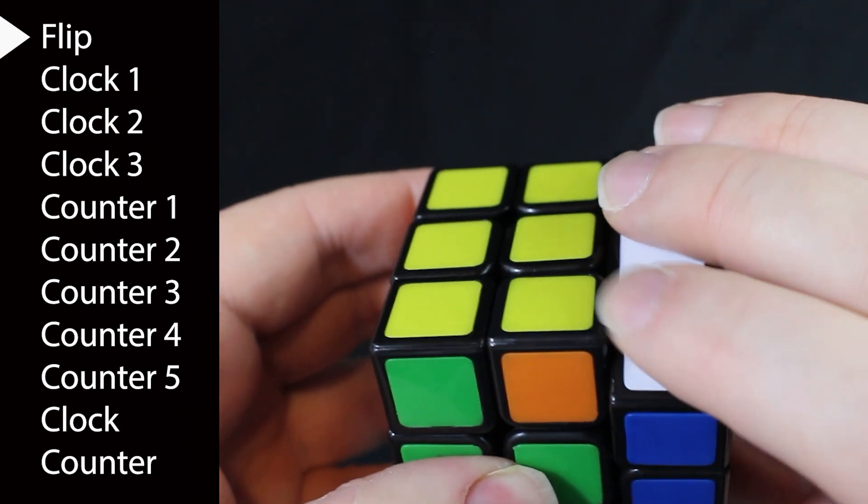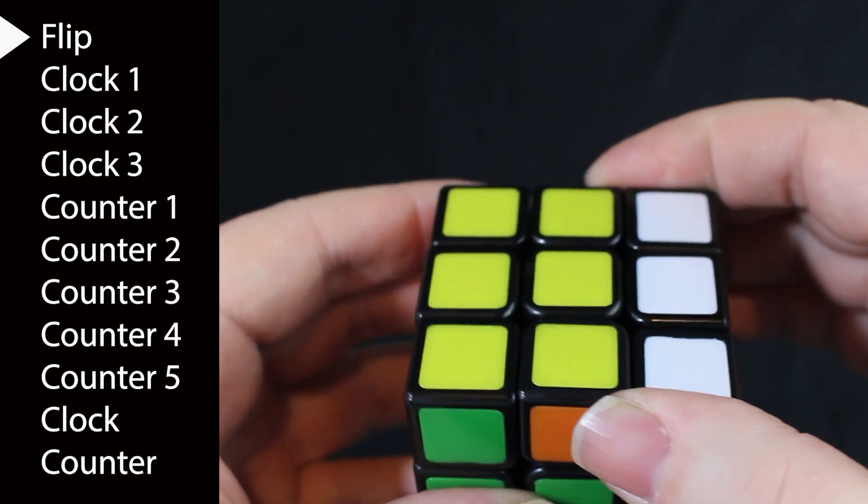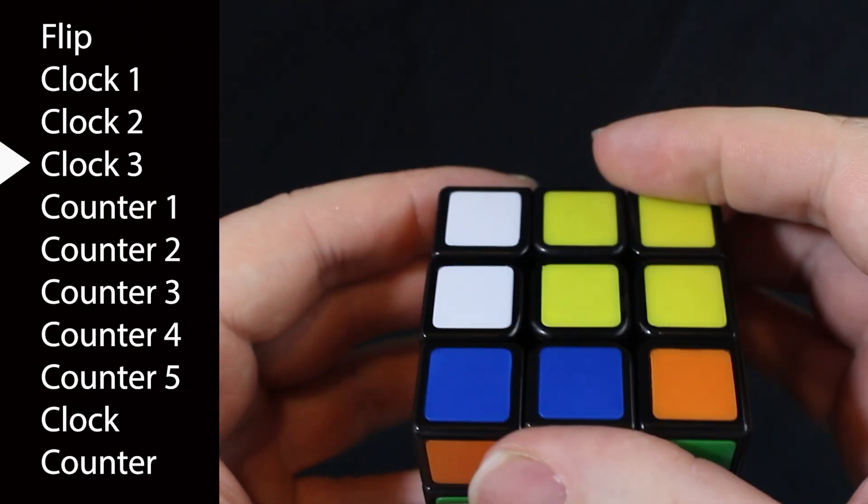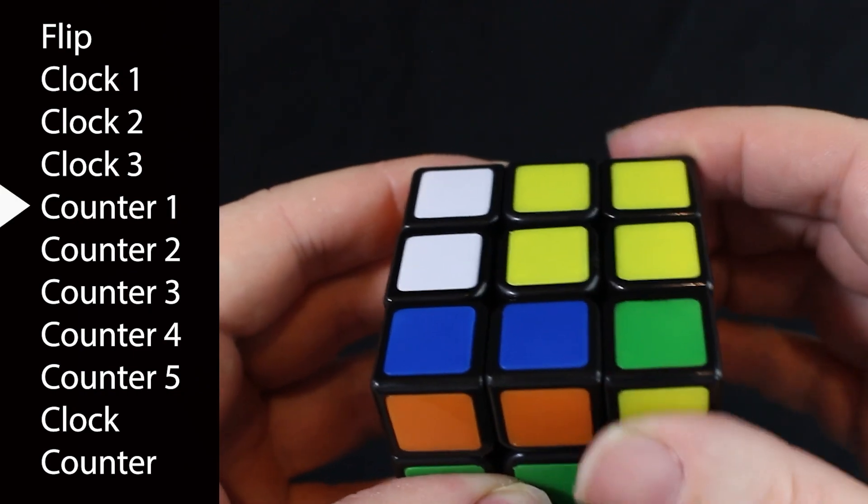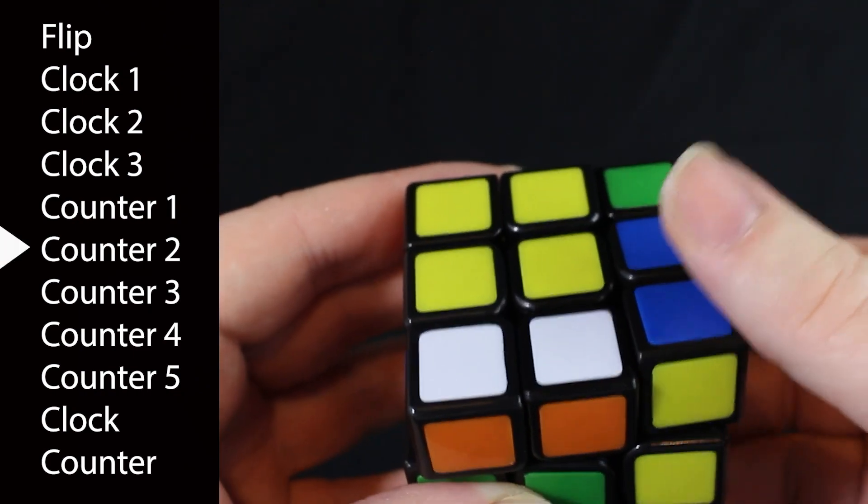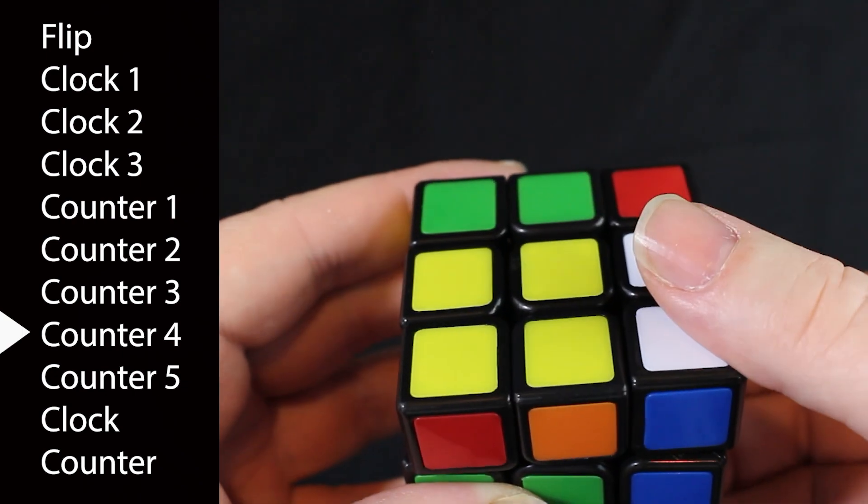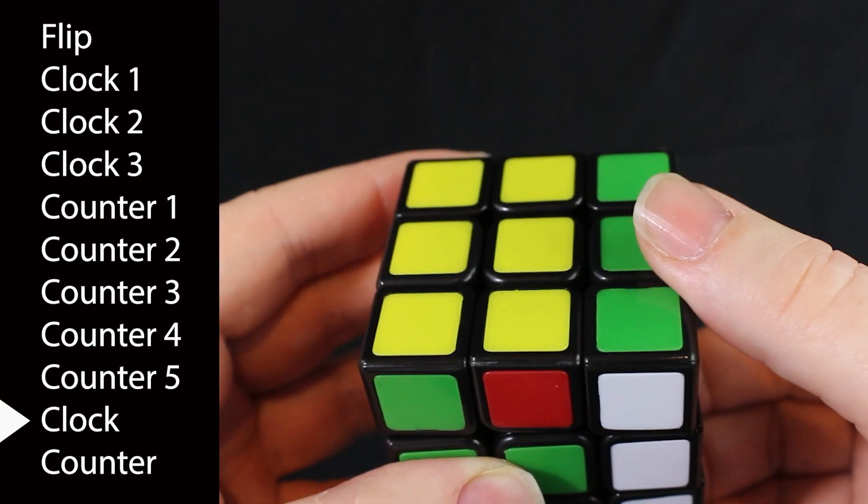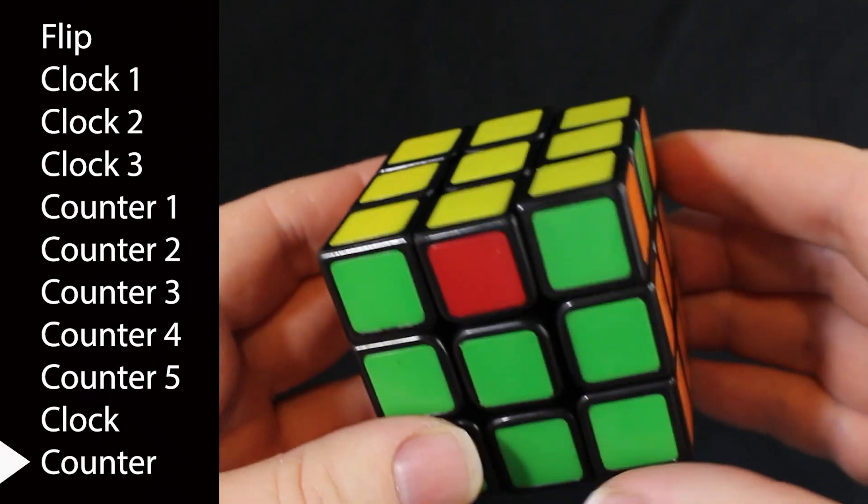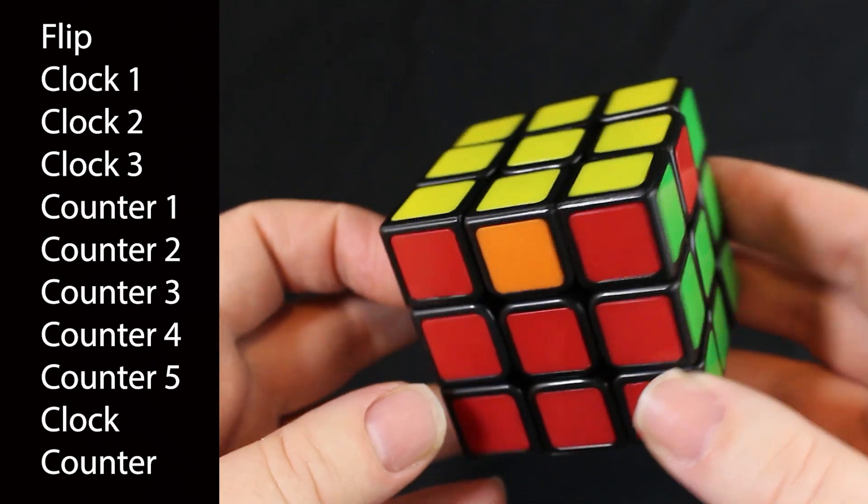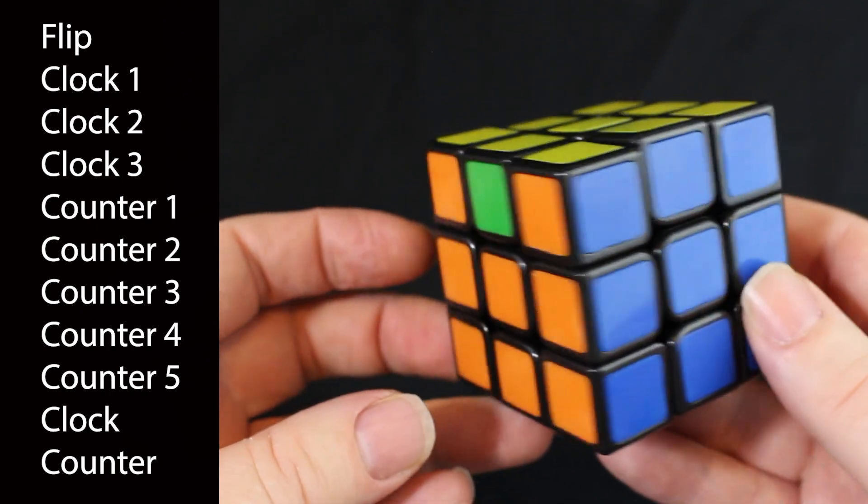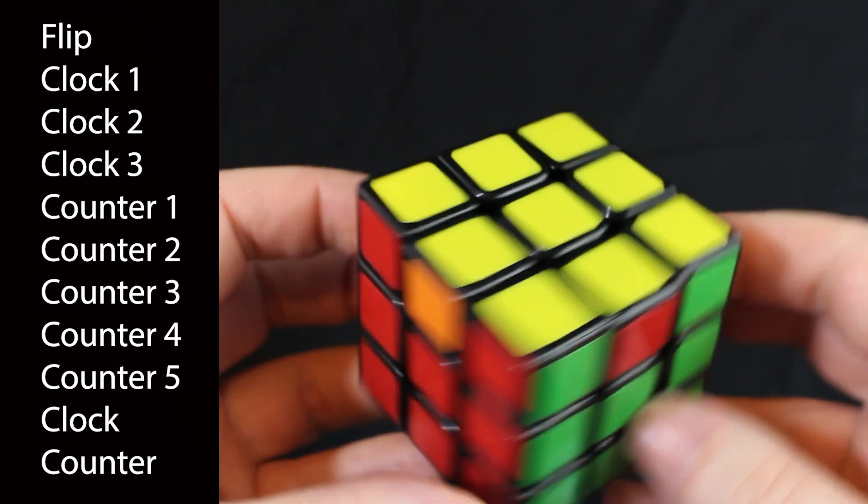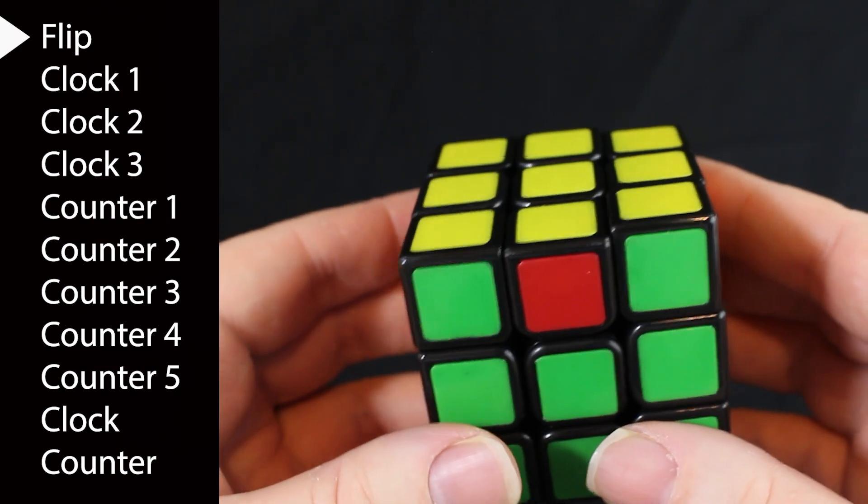Flip, clock one, clock two, clock three, counter one, counter two, counter three, counter four, counter five, clock, counter. Okay, now we just take a look at what happened. It's still not solved and the blue is in the back there and that's fine. So we're going to put it back the way we had it and then we do it again.